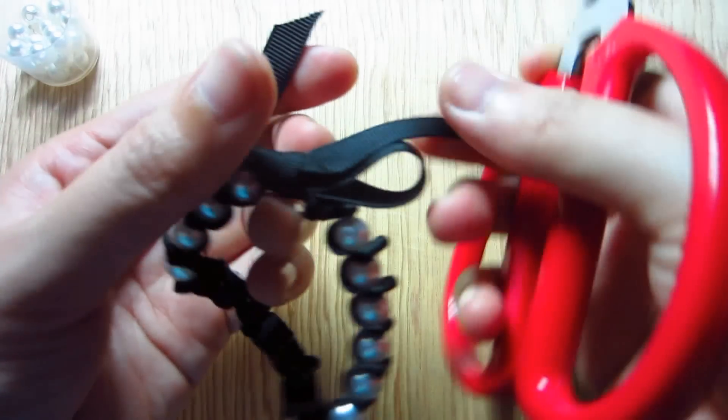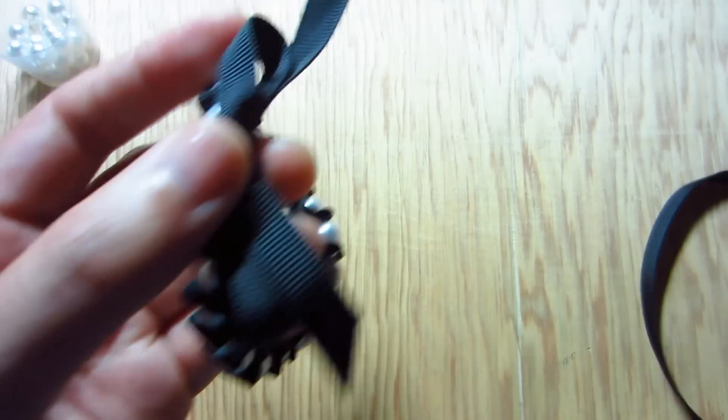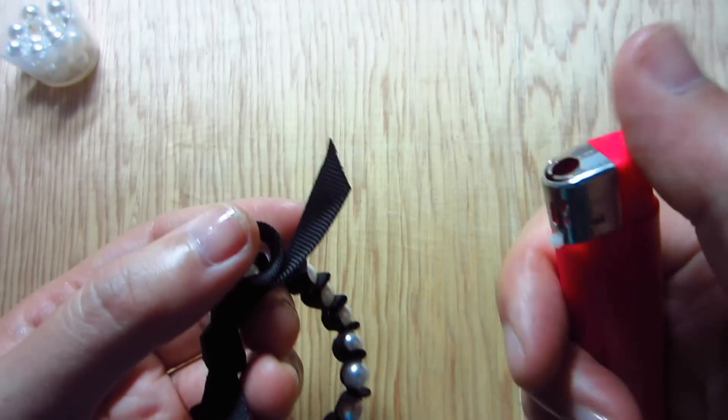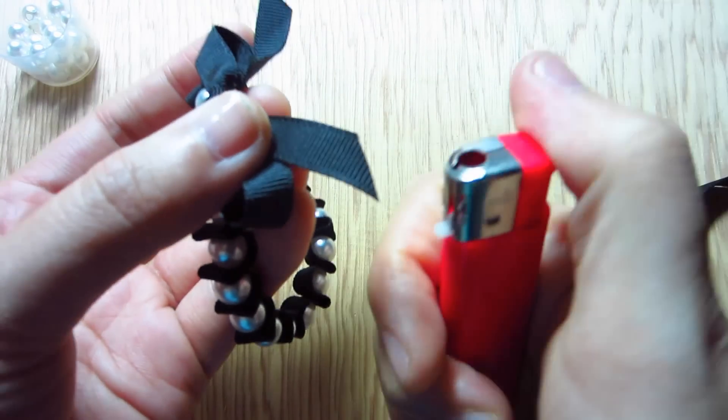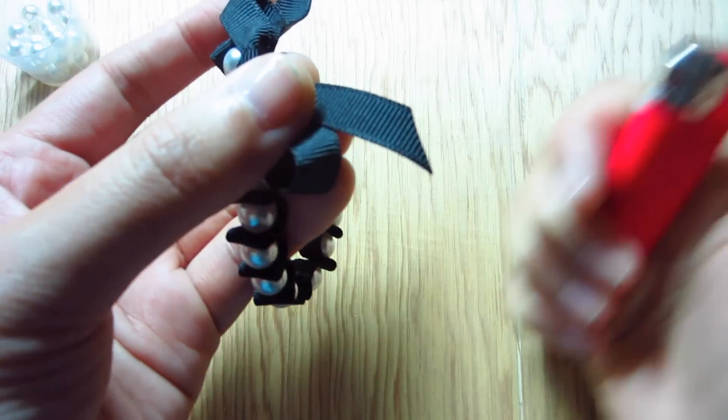Snip off the extra ribbon at the ends. Now all you have to do is move a fire along the ends to keep the ribbon from fraying.